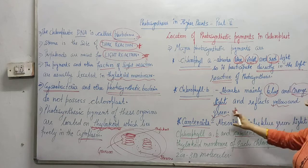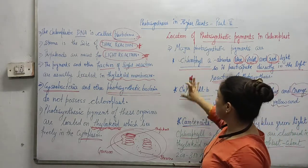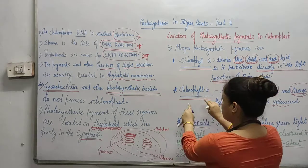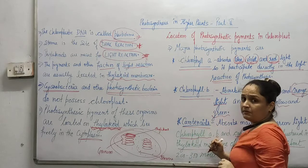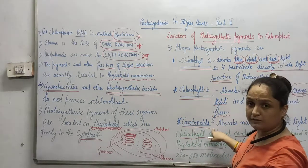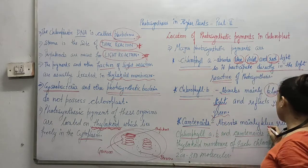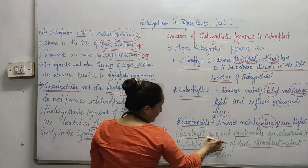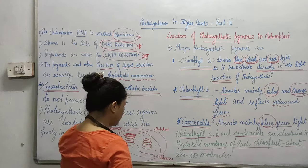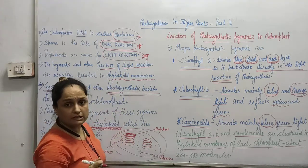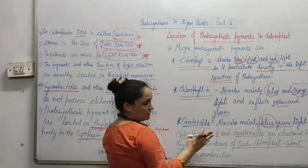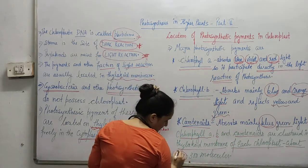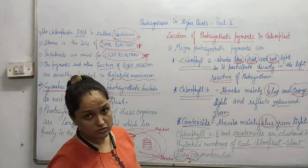Chlorophyll B reflects yellow and green light and helps Chlorophyll A. Since Chlorophyll B cannot directly participate, whatever energy it captures it transfers to Chlorophyll A. The same thing happens with carotenoids, which are made from carotenes and xanthophylls. Carotenoids absorb blue and green light. Chlorophyll A, Chlorophyll B, and carotenoids are going to be clustered together in the thylakoid membrane, forming components of the chloroplast. Their number is nearly 200 to 300 molecules per chloroplast.